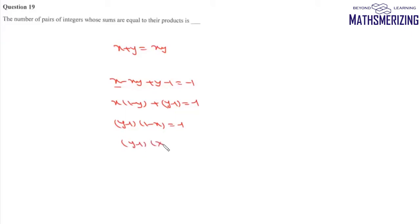Then we can write y minus 1 into x minus 1, and this is equal to 1. So we get this form as y minus 1 into x minus 1 is equal to 1.